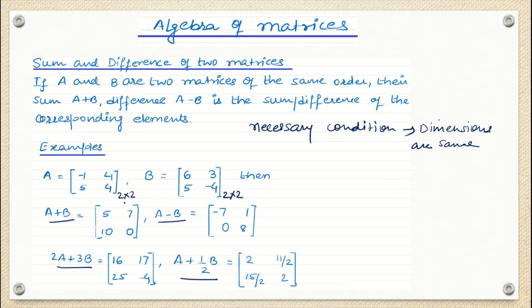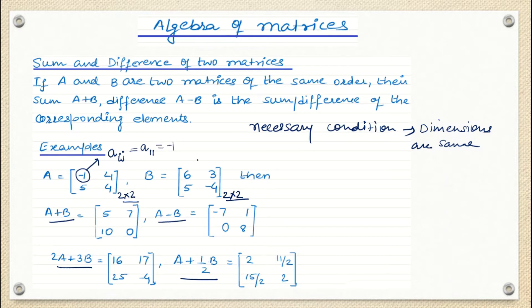Since this matrix is order 2 cross 2 and the other is also order 2 cross 2, it is possible to perform addition. So we are going to add the corresponding elements of each matrix. For example, element A11 is minus 1 and element B11 is 6, so we add minus 1 and 6, giving us 5 written at that place. For the next element, 4 plus 3 is written there.